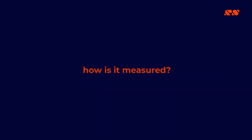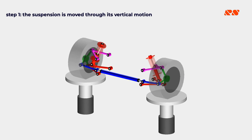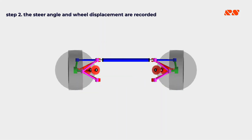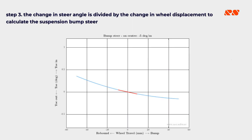How is it measured? Step 1: the suspension is moved through its vertical motion. Step 2: the steer angle and wheel displacement are recorded. Step 3: the change in steer angle is divided by the change in wheel displacement to calculate the suspension bump steer.